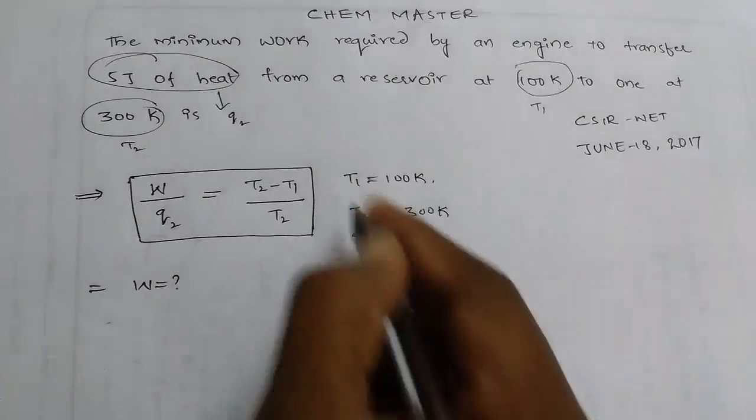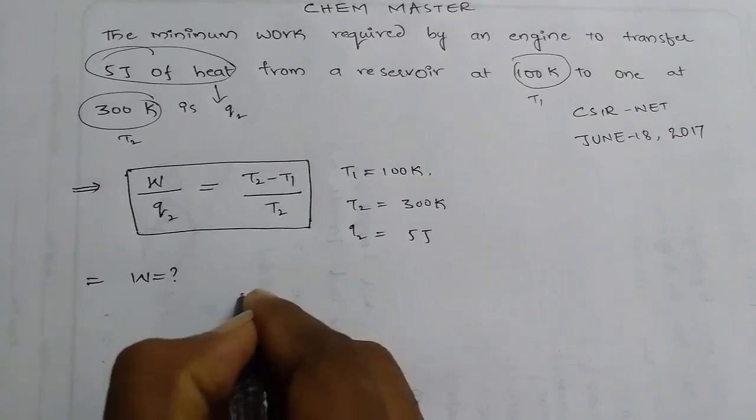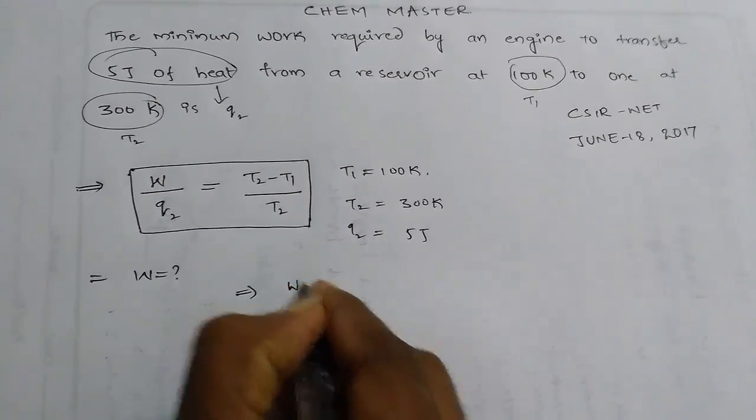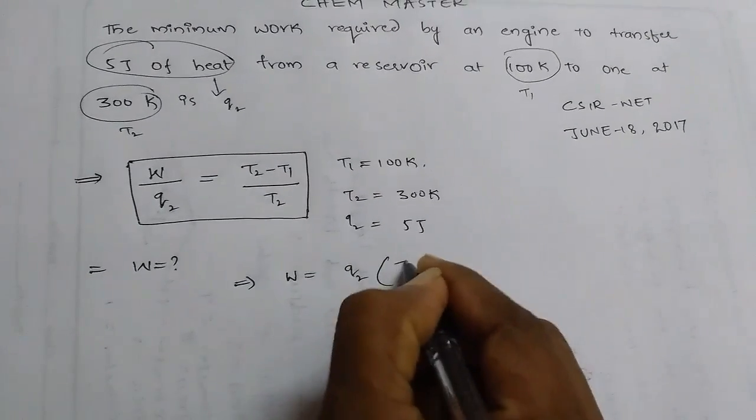By substituting all this information in the given formula, we can get W = Q2(T2-T1)/T2.